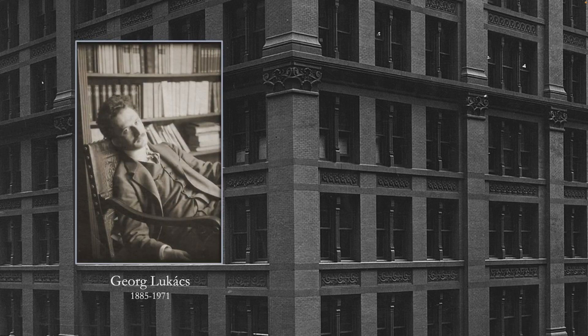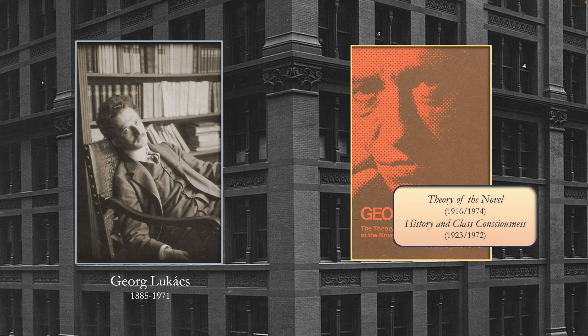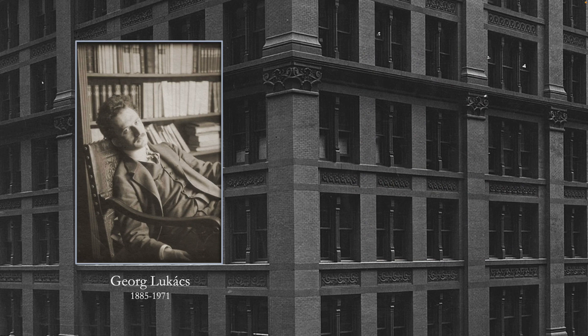This is Georg Lukács. His contribution to Marxist theory is that he was among the first to apply Marxist political theory to literature. He did this in a book called Theory of the Novel, appearing in 1916, not translated into English until the 1970s. Another book, History and Class Consciousness, appeared in 1923 and was translated into English in 1972. A lot of these European Marxist philosophers had their books written long ago and then translated in a narrow window in the late 60s and early 70s, when academic interest in Marxism really took off, as part of the cultural revolution in America in the 1960s.